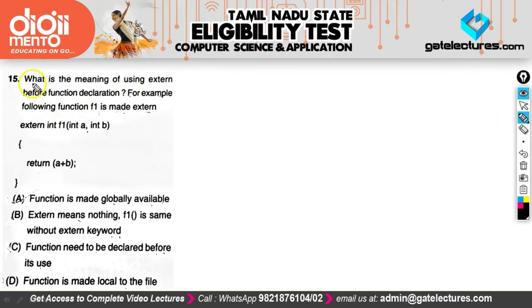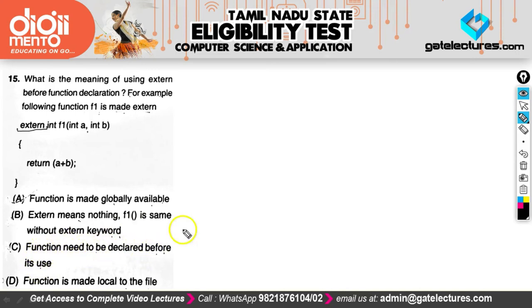The next question asks what is the meaning of using extern before a function declaration. The options are: A — function is made globally available; B — extern means nothing, the function is the same without it; C — function needs to be declared before it's used; D — function is made local to the file. Option D is clearly wrong — functions are locally available to their file by default.